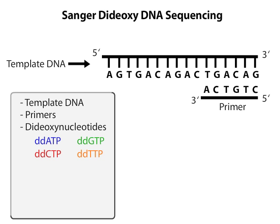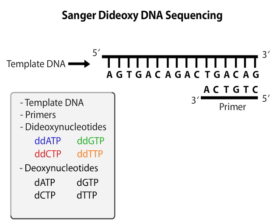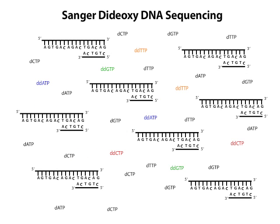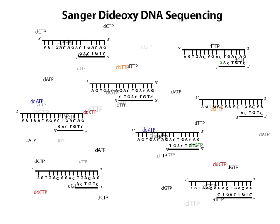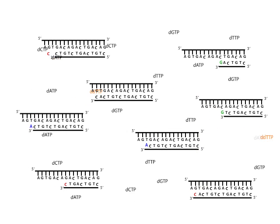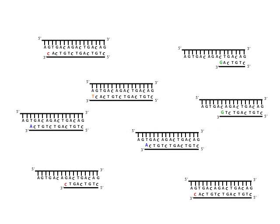The reaction mixture also contains larger amounts of the 4 deoxynucleotides and the enzyme DNA polymerase I. Many copies of each component exist in the reaction mixture. By the end of the reaction period, a population of DNA strands of varying size is produced, with each strand truncated at a different position by one of the 4 fluorescent nucleotides.